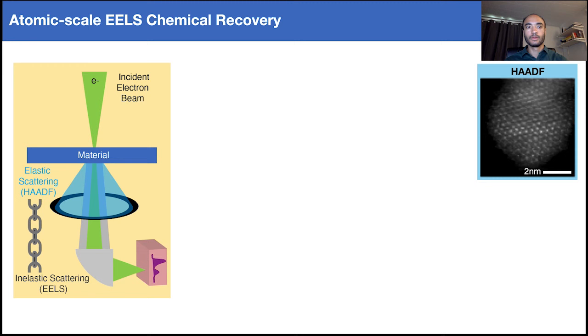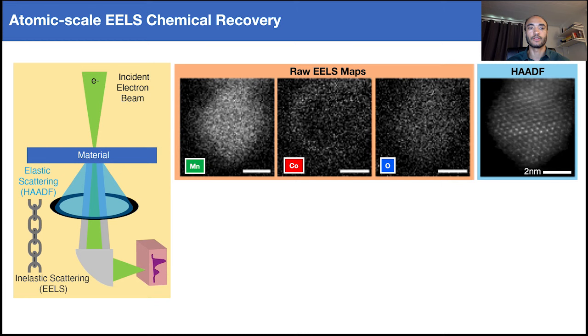We thus reduced the field of view down to atomic length scales and study the applicability for recovering chemistry for a supercapacitor cobalt-manganese oxide nanoparticle. The HAADF micrograph hints that there's a homogeneous distribution of the three elements. However, the raw EELS maps reveal a core shell structure is present, with the interior consisting of manganese oxide and the exterior of cobalt oxide.